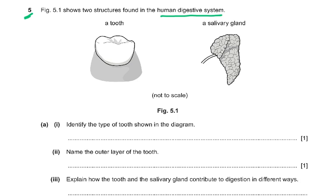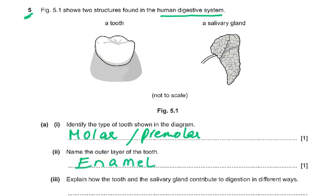Identify the type of tooth shown in the diagram. It looks like a molar — you could have said a molar or a premolar. Then it says name the outer layer of the tooth. It's called enamel. The outer layer of the tooth is not called the crown — crown refers to a part of the tooth but is not the correct answer here.